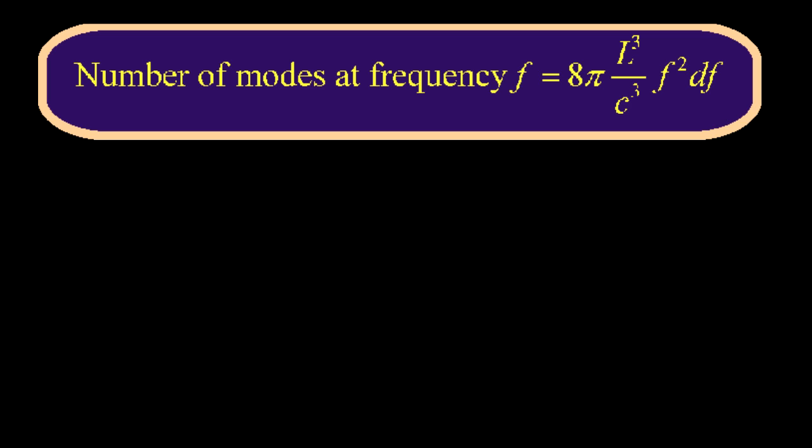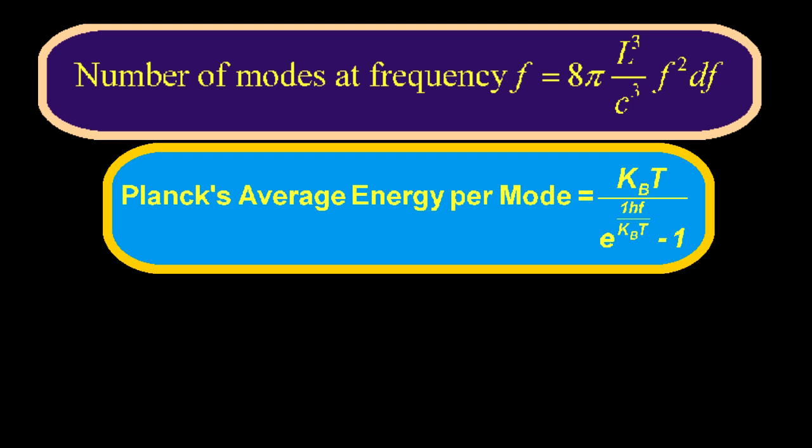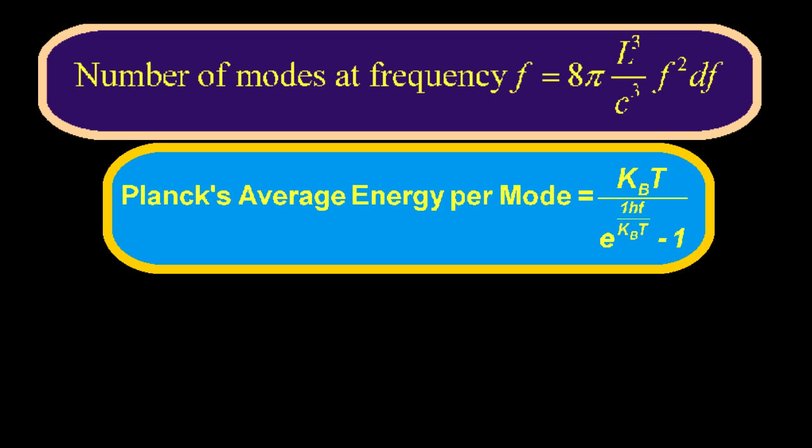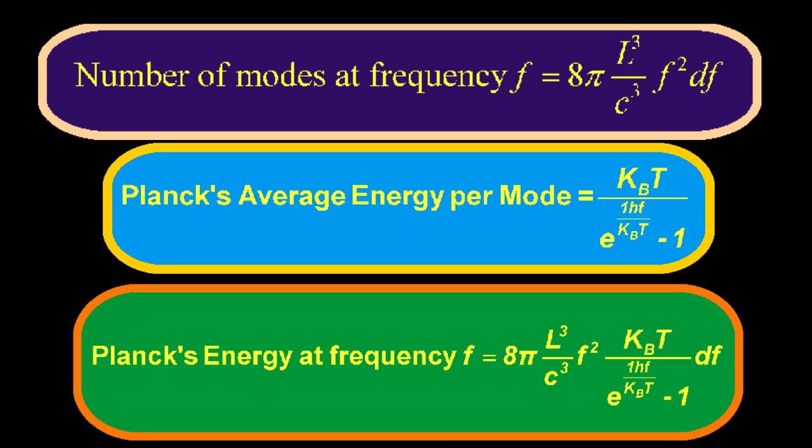Remember the formula for the number of modes as a function of frequency. Now just multiply by the new formula for the average energy per mode, and you get a very famous result. This equation earned Planck a Nobel Prize and a place in history. It's called Planck's equation, and was the first equation to use Planck's constant, h.